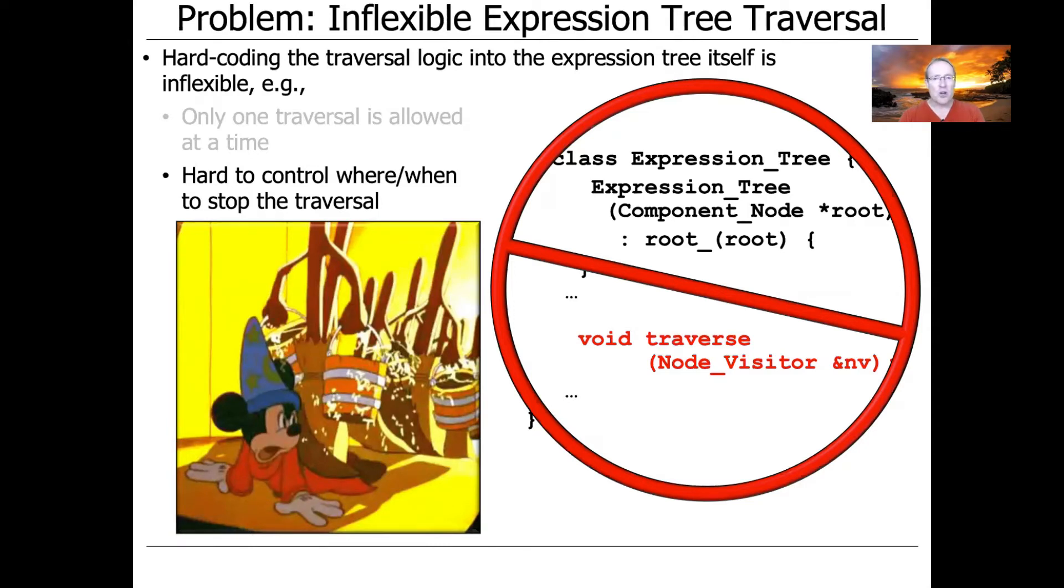Another problem is that with this approach, it's hard to decide when you want to stop traversing. When you use internal iteration, it typically has to traverse through the entire range, or you have to do something very draconian, like throw an exception. And that's probably overkill for many use cases.